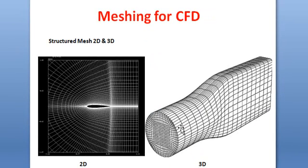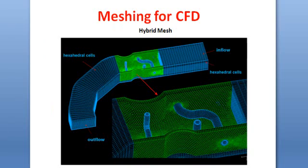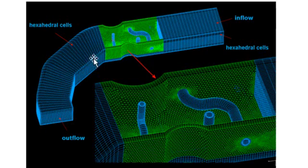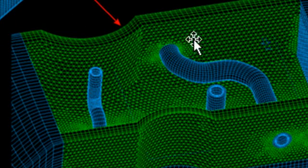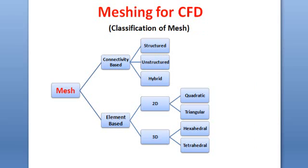In the connectivity-based classification, there are three different types of mesh. First is structured mesh — for both 2D and 3D, the elements are structured and well organized. Second is unstructured mesh, for both 2D and 3D. Third is hybrid mesh, where part of the domain is structured and part is unstructured, which is important for resolving solutions where variable changes are very high.